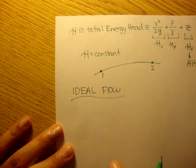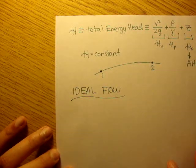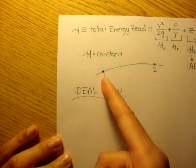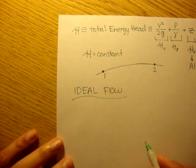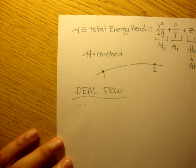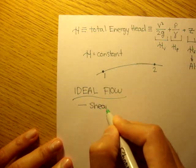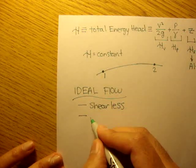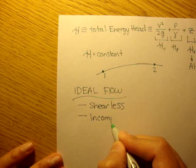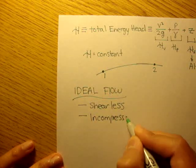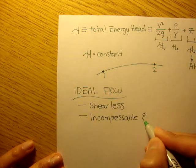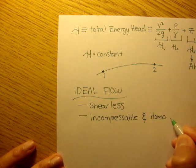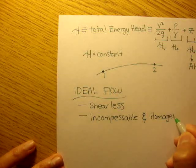And these conditions have to be met in order to use the total energy head along a streamline. And these conditions are that the fluid must be shearless, that the fluid must be incompressible and homogeneous.